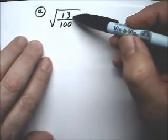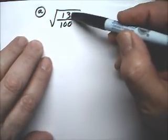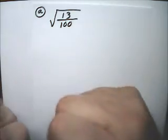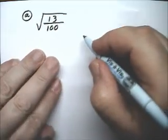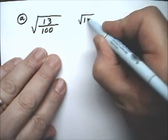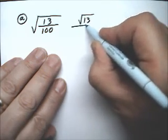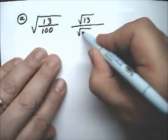And the same way we split the multiplications, we can also split the divisions. So, this would become radical 13 over radical 100.